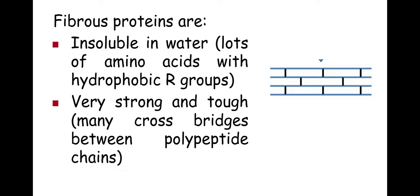Fibrous proteins are also very strong and very tough, and this is because they have many cross bridges between polypeptide chains. As you can see here, the blue lines represent the polypeptide chains and the black lines represent the cross bridges. They normally are disulfide bridges because that provides a lot of strength. It's a very strong bond between these polypeptide chains.